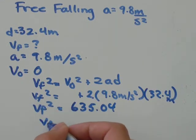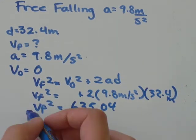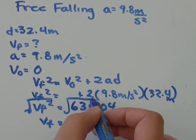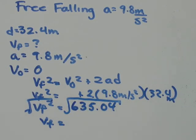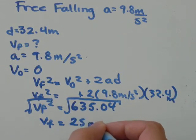So to find regular VF, all you need to do is square root both sides. So the square root of 635.04, I get that's equal to 25.2.